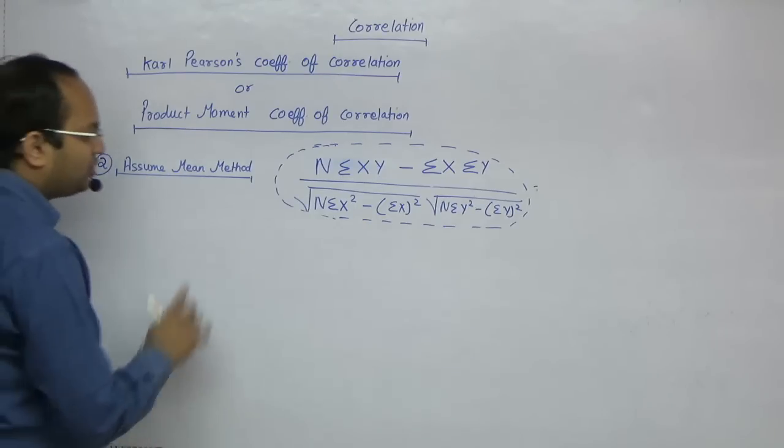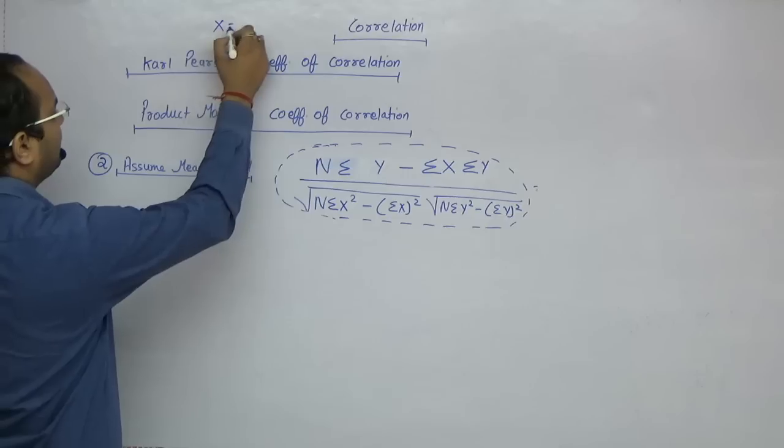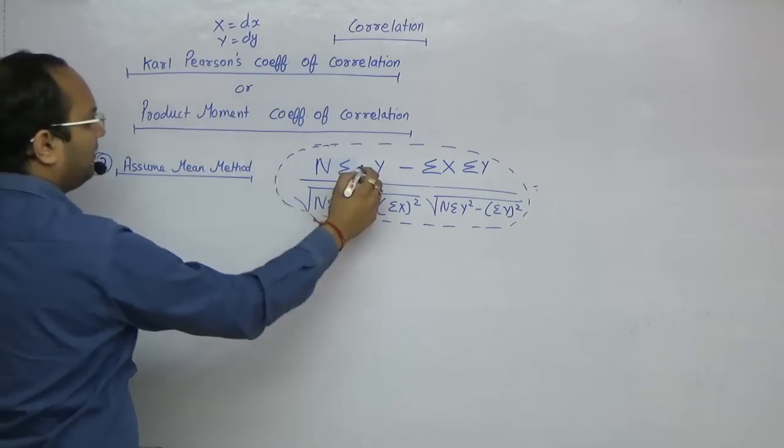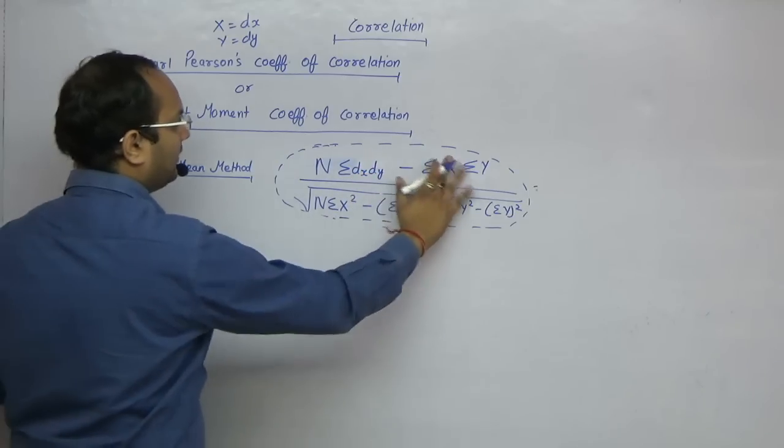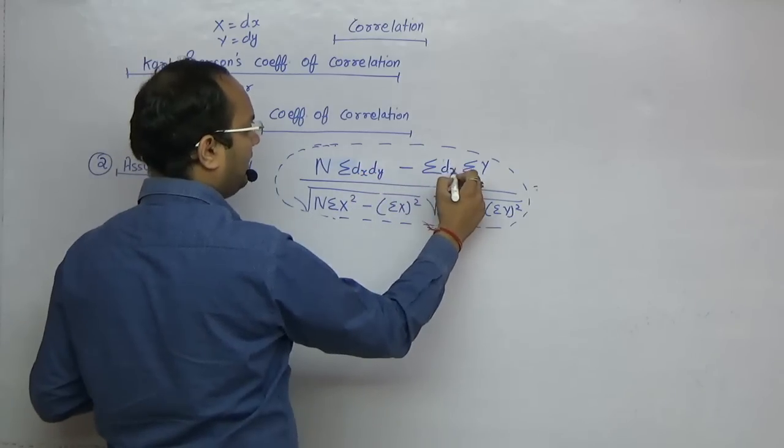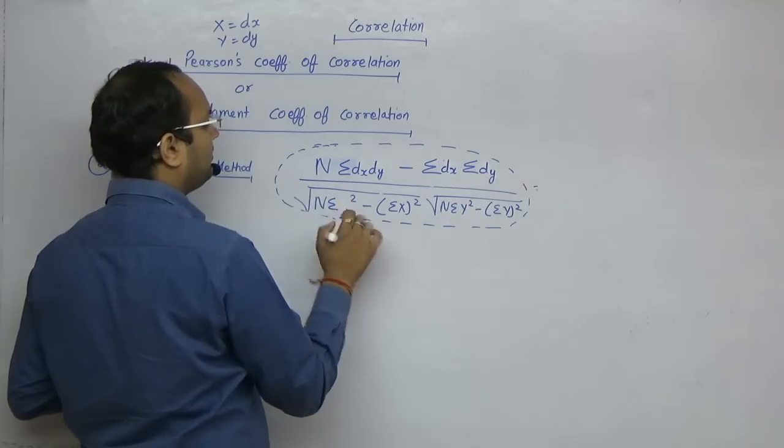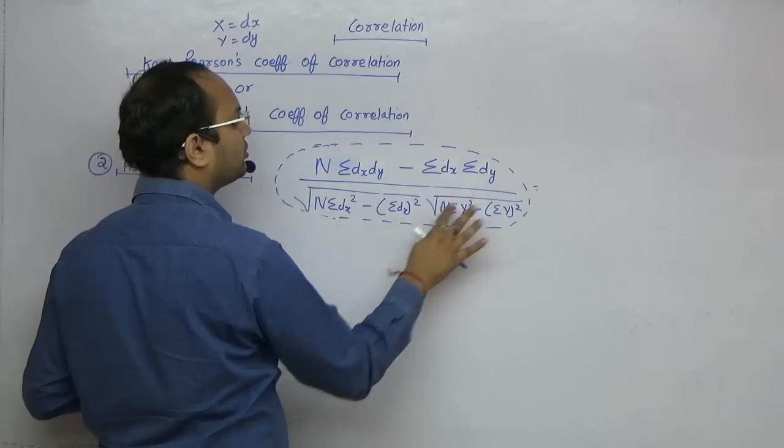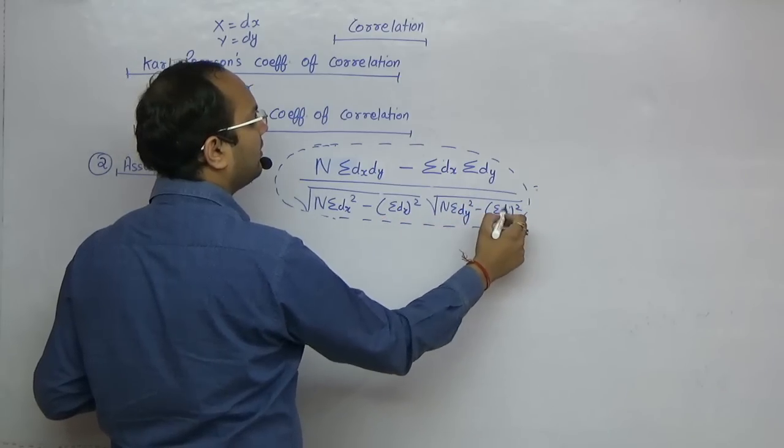In assume mean method, whatever x you have, call it dx, and whatever y values you have, call them dy. So x becomes dx and y becomes dy. Then compute sigma dx, sigma dy, n, sigma dx square, sigma dx whole square, and similarly for dy.